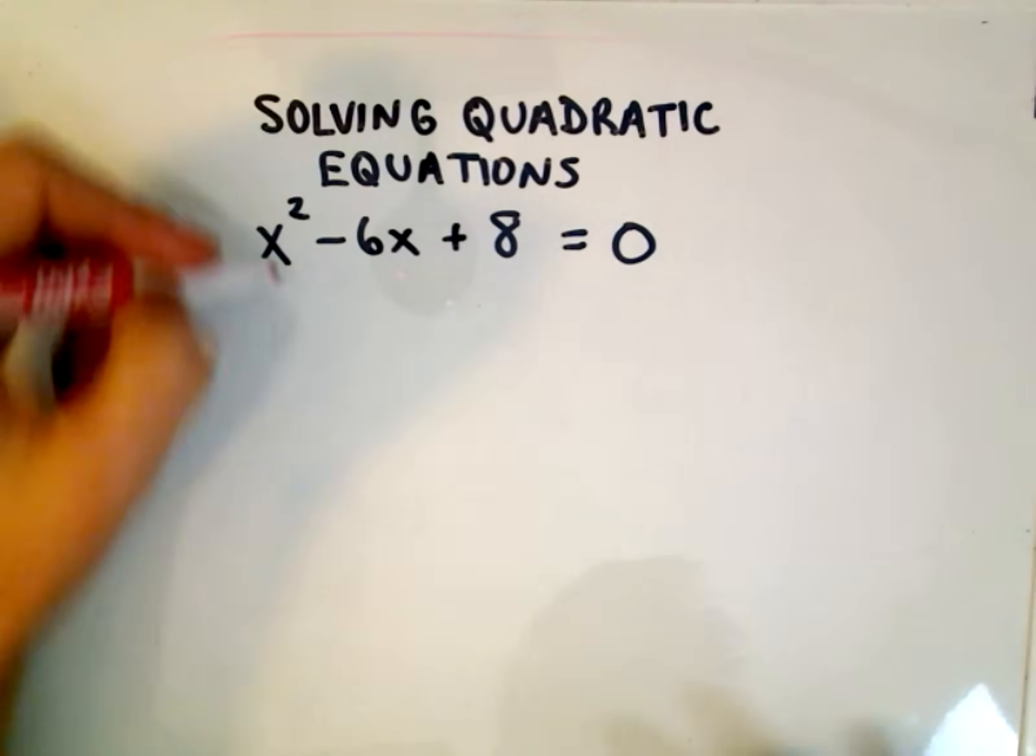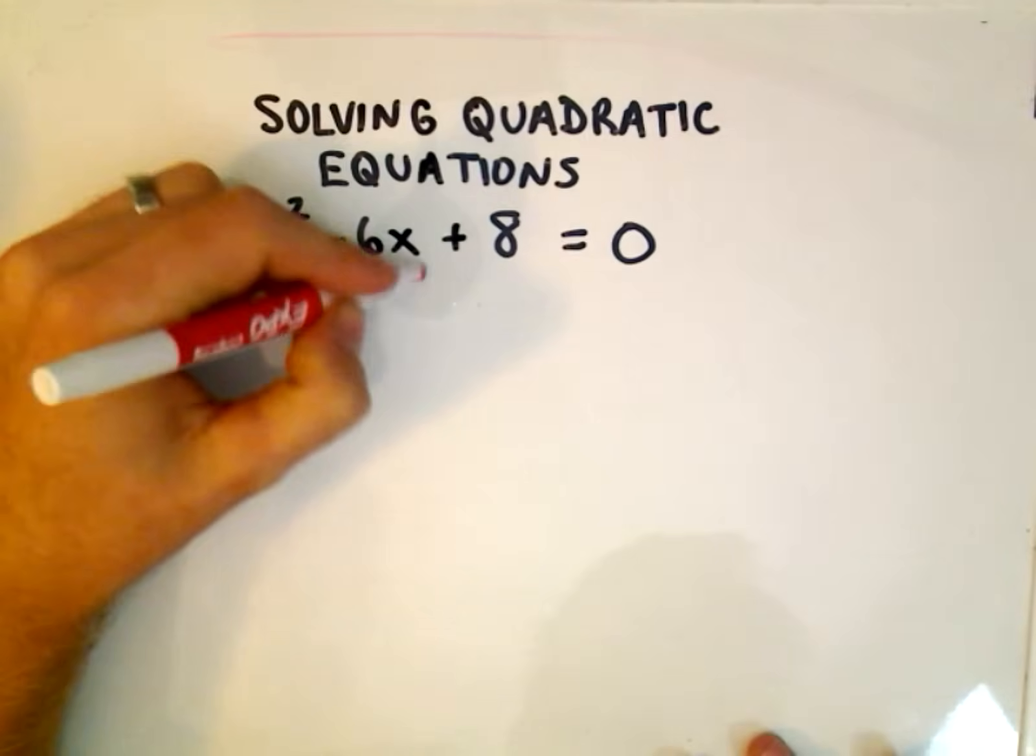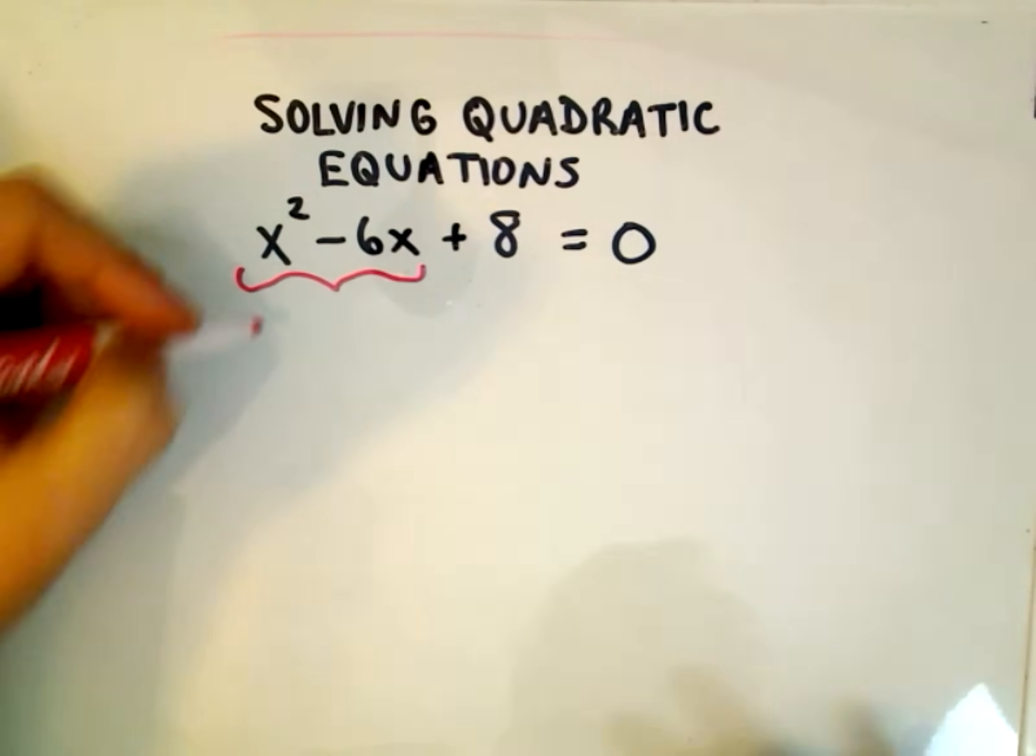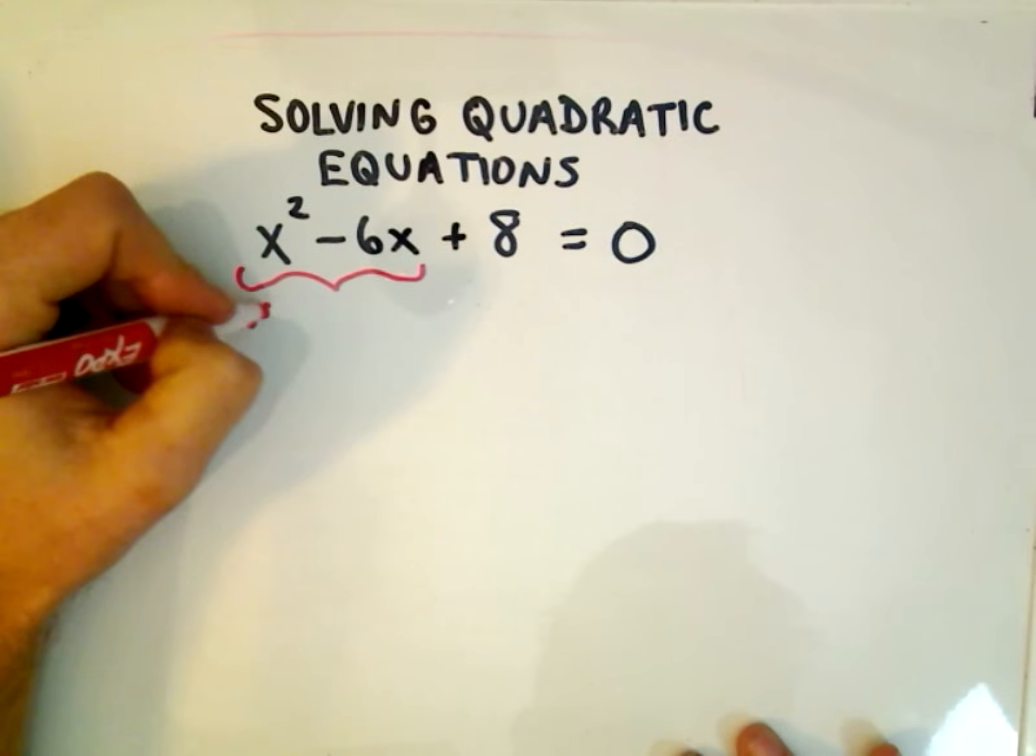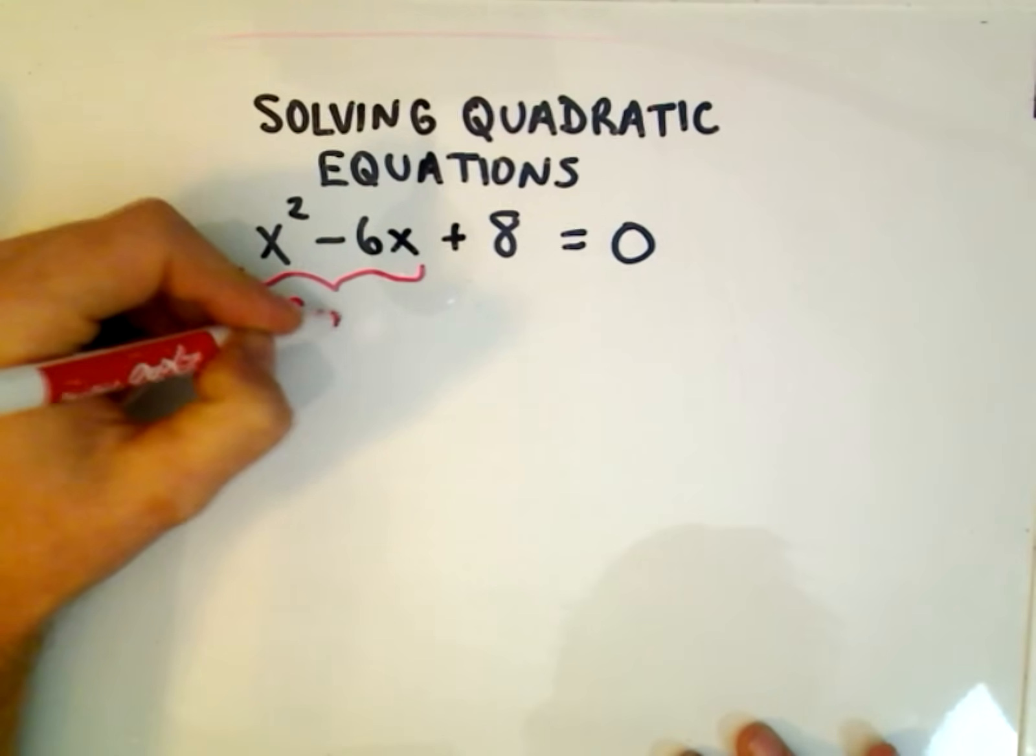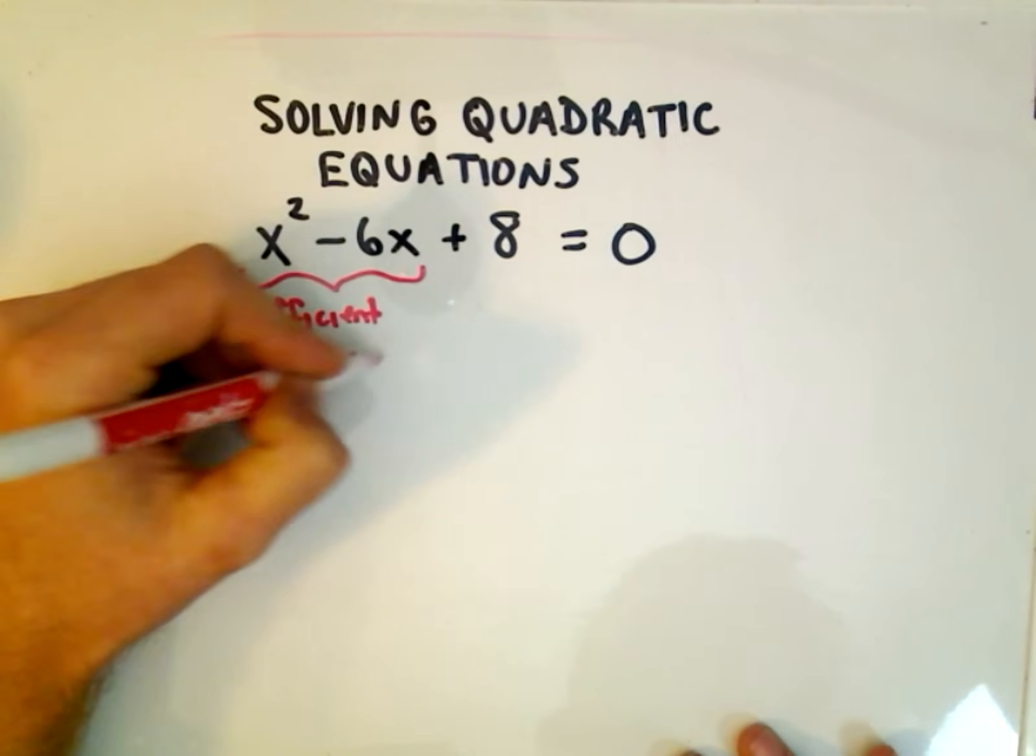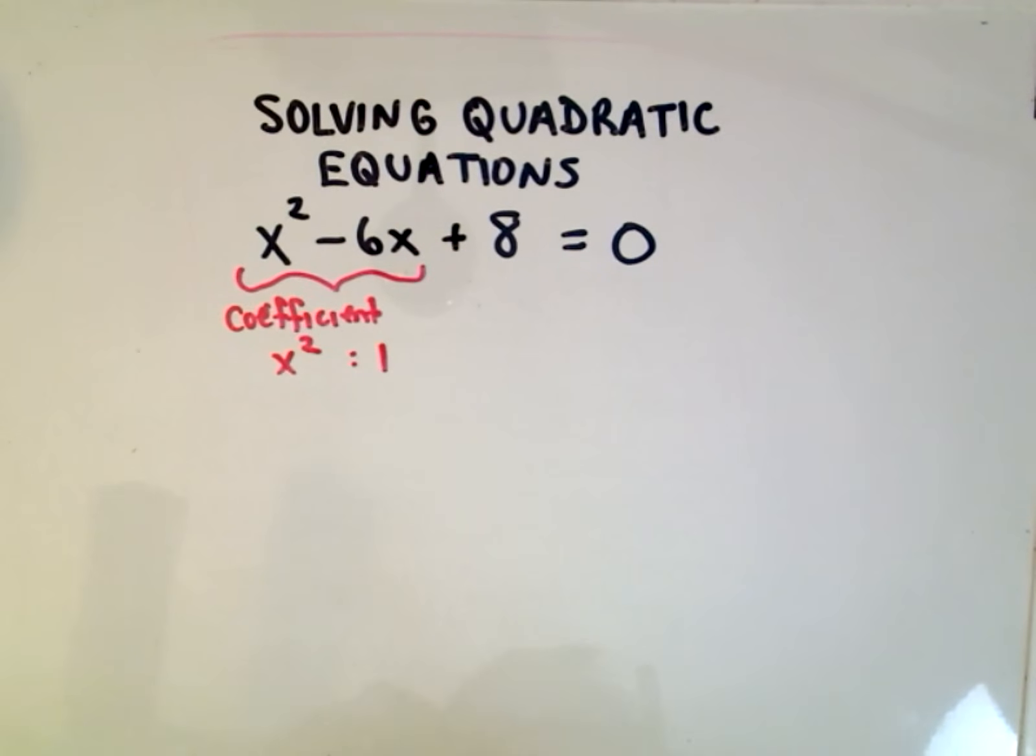The first thing you want to do is you look at the x terms basically that are in there, and you want the coefficient of the x squared term to equal 1, which it does in this case. If not, you have to factor it out, and I'll do something like that in a separate example.